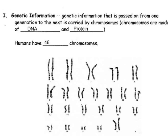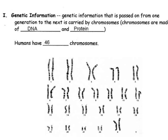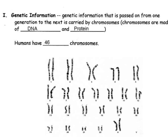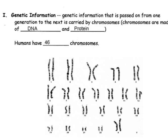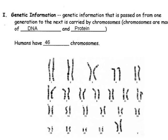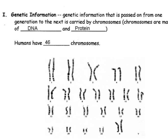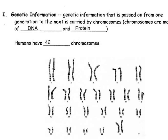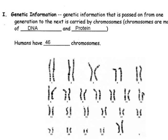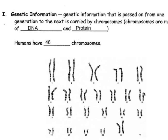Both of these chromosomes code for the same traits. They are said to be homologous, meaning that they have matching information. For example, they might both code for eye color, height, and skin tone. Some traits are dominant and some are not. This means that if you inherited dominant traits on your mother's chromosome and not on your father's chromosome, you will have her eye color, height, and skin tone.